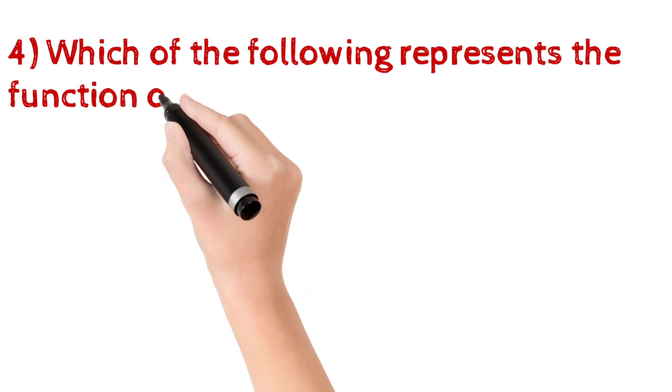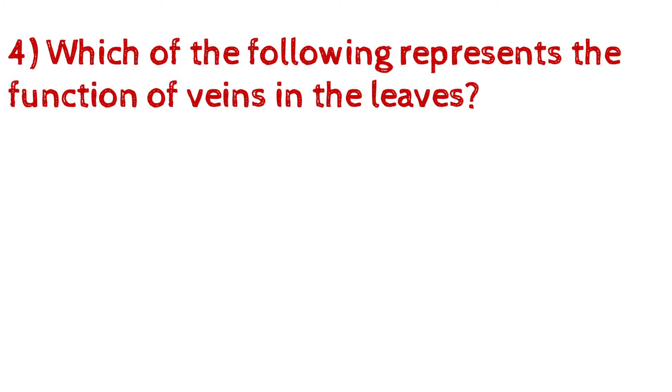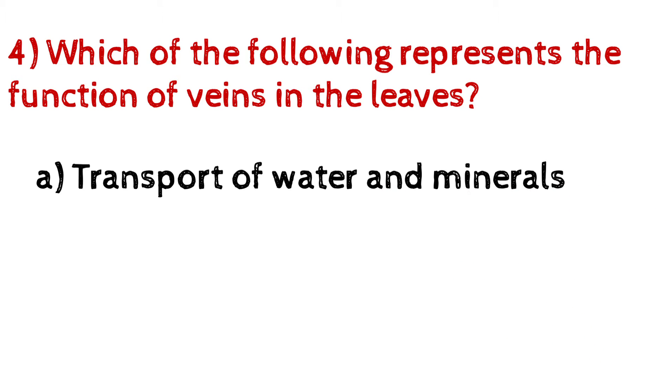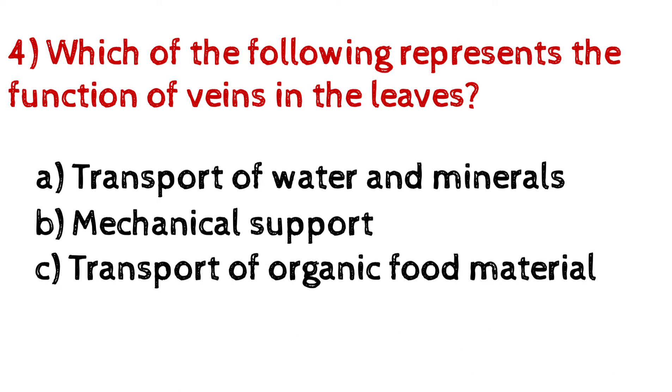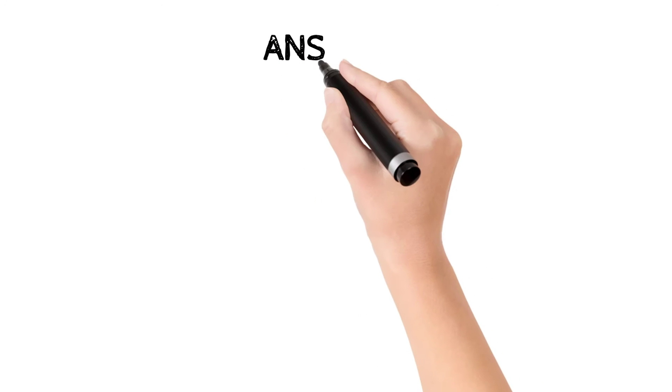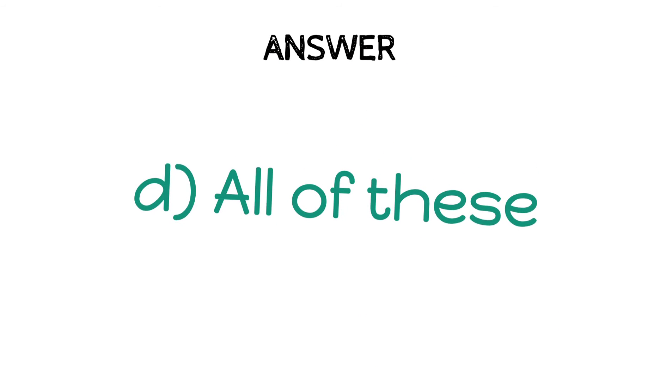Question number 4: Which of the following represents the function of veins in the leaves? A. Transport of water and minerals, B. Mechanical support, C. Transport of organic food material, D. All of these. And the answer is D, All of these.